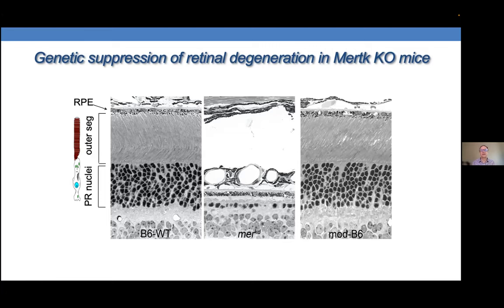He called back a day later and said they did have some abnormalities, since we had sent them as MERTK knockout mice. That began our quest to understand how we could have so dramatically suppressed the photoreceptor degeneration due to loss of MERTK. The suppressive activity was still present in our colony after so many backcross generations, which was a clue as to where the modifier likely lay.